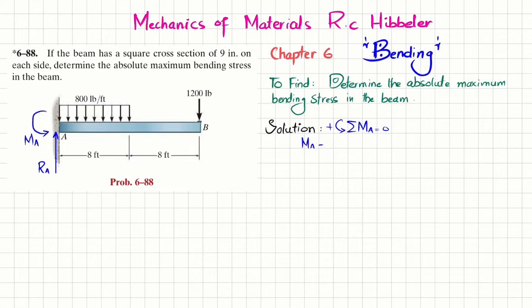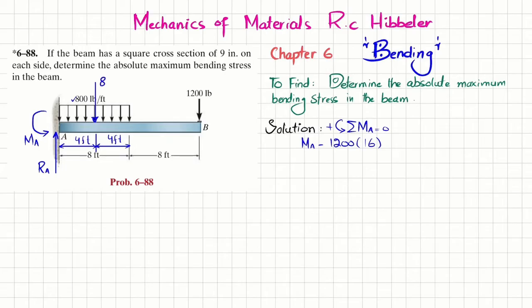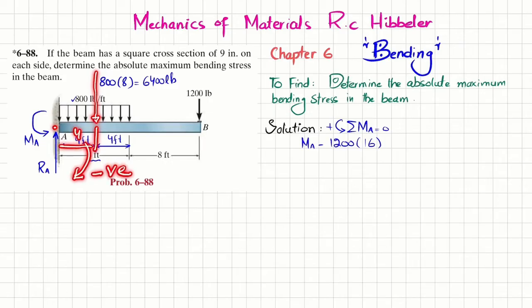The third load is due to the uniformly distributed load. We convert it to a point load acting at the midpoint of the 8-foot span, so the distance from A is 4 feet. The distributed load converted to a point load equals 800 times 8 feet, giving 6400 pounds. About point A, the perpendicular distance is 4 feet and it produces clockwise moment, so it is negative: minus 6400 times 4 equals zero.